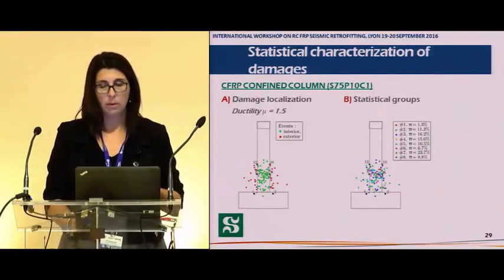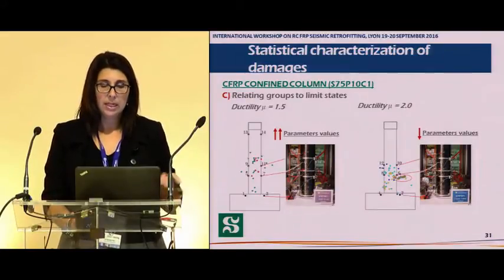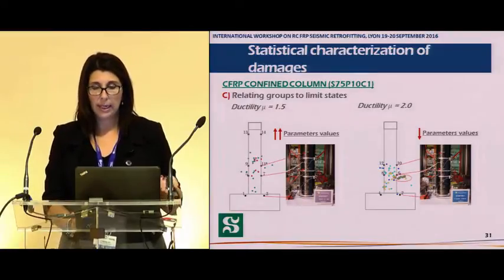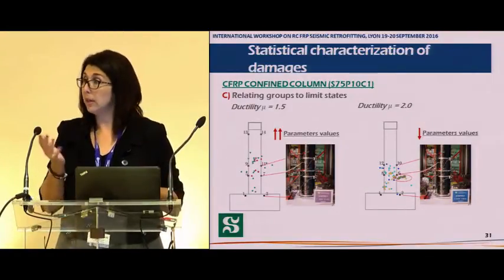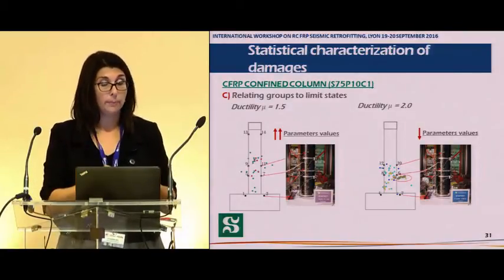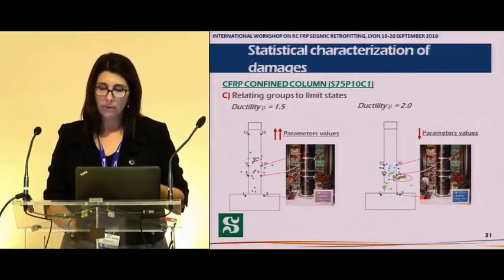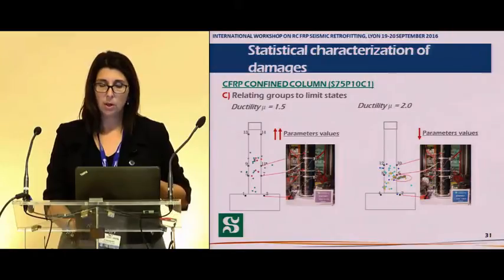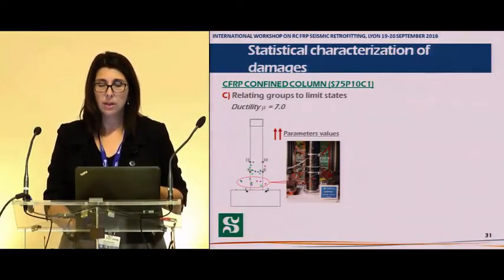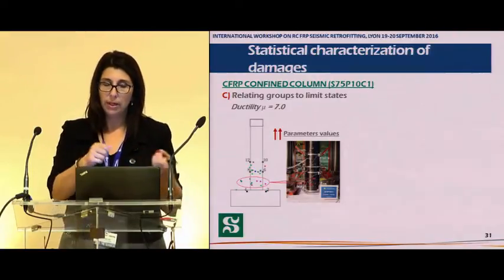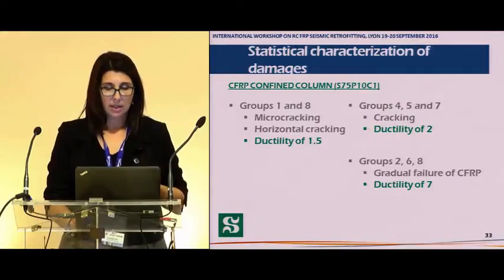For the column confined with one layer of CFRP wrap, we again identified eight groups. At ductility 1.5, events from groups one and eight correspond to microcracking of concrete and also horizontal cracking of CFRP, which has another acoustic signature — we observed it visually and measured it with acoustic emission. At ductility two, events from groups three, five, and seven correspond to more concrete cracking that cannot be seen during the test. At ductility seven, other events correspond to gradual failure of the CFRP wrap — this column failed gradually, not in one big event.